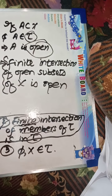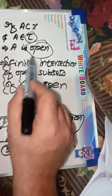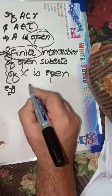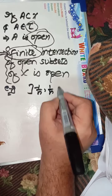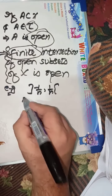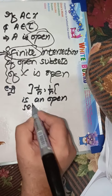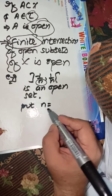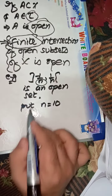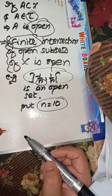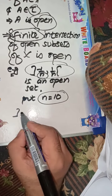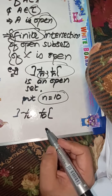So the point can be written as: finite intersection of open subsets of X is open. Now I am going to discuss why we use the word 'finite' here. Let me give an example. Consider the open interval (-1/n, 1/n). Every open interval is an open set, so this is an open set for every integer n. If we put n equal to 10, we can take the intersection of all these open sets.